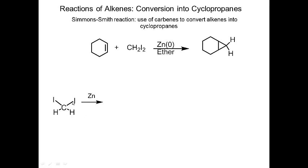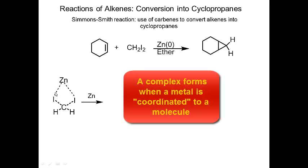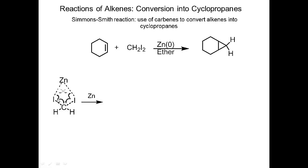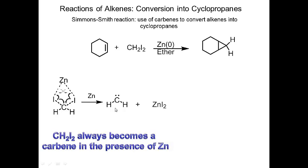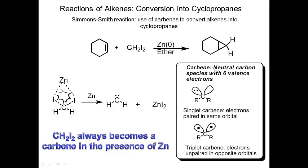I take diiodomethane and react it with zinc. In the homolytic process, one electron comes onto carbon, one goes between zinc and iodine, and then one electron from the other C-I bond comes onto carbon while the other electron goes between zinc and iodine. In the product, I get a carbon species where carbon has a lone pair — this is what we call a carbene — plus zinc iodide. Anytime you see diiodomethane in the presence of zinc, you get a carbene. A carbene is neutral: it's carbon with six valence electrons.